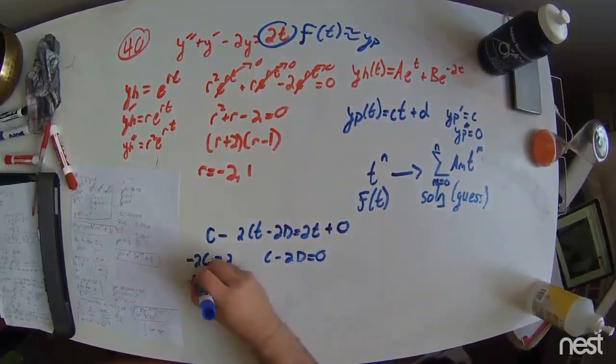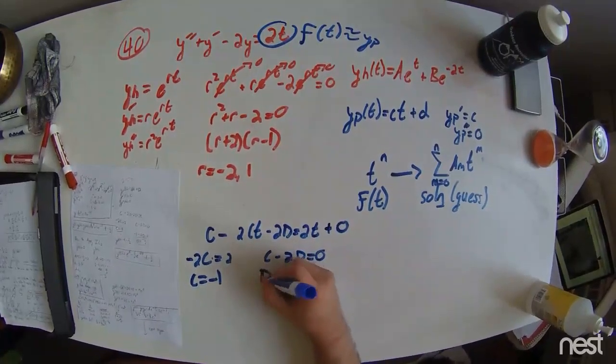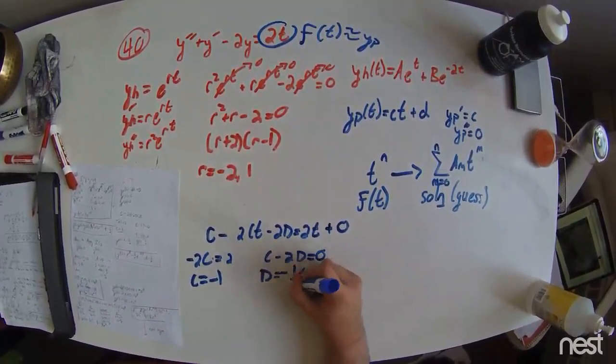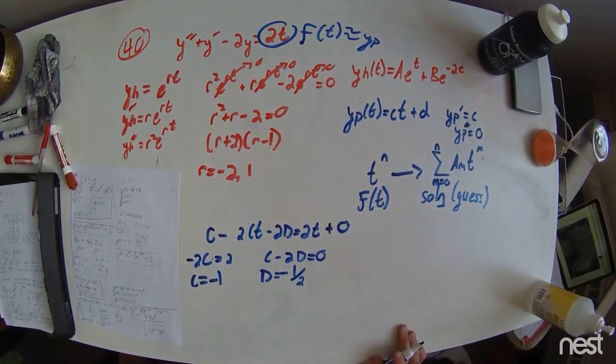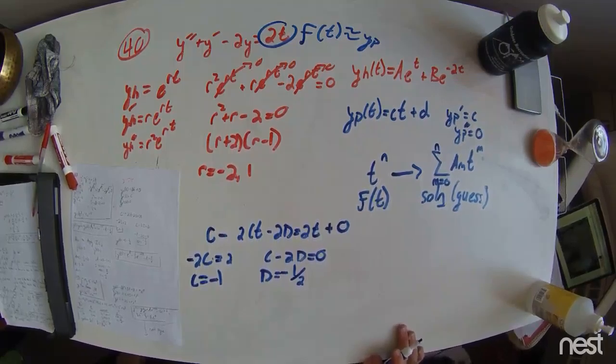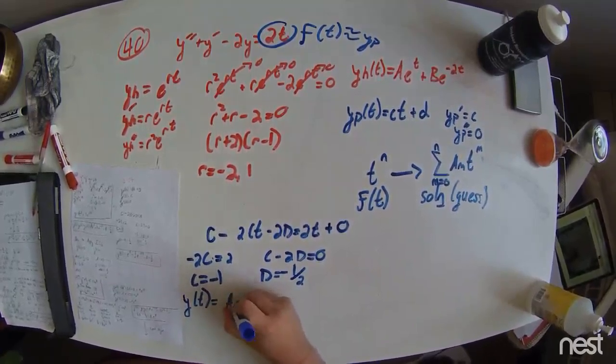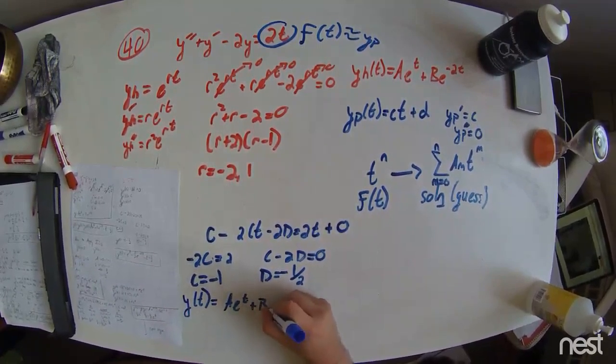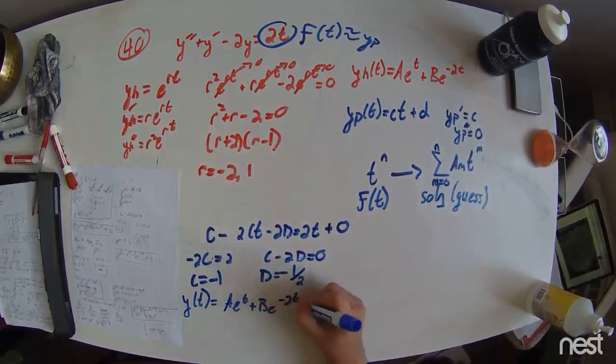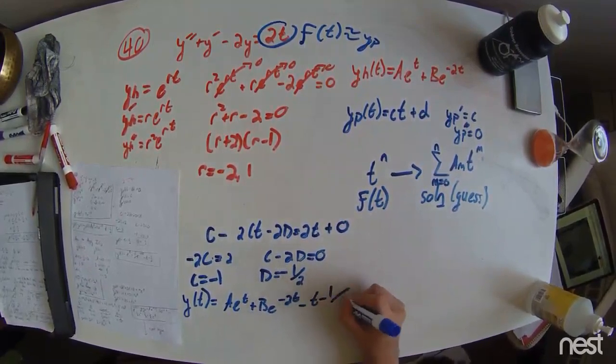Solving for this, we have c equals minus 1, and d equals negative half. Plugged this in back into our expression, we have y of t equal to a e to t plus b e to the minus 2t minus t minus 1 half.